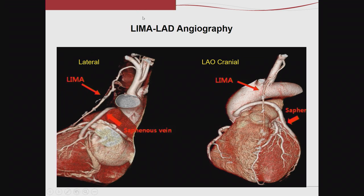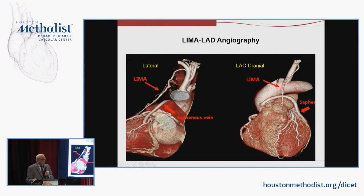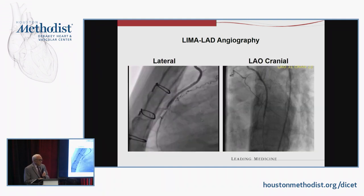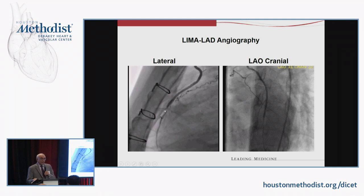This CT illustration of a LIMA going to an LAD highlights a view that is critical to learn — the lateral view. In this patient, an LAO cranial and almost any other view fails to show the distal anastomosis, but the lateral view shows that very important structure. Looking at the distal anastomosis in another view, you see the LIMA filling the distal LAD and you're tempted to say it's fine — but it's not so fine if you look at the anastomosis in the lateral or extreme LAO view, which shows the nature of the site where LIMAs can have problems.